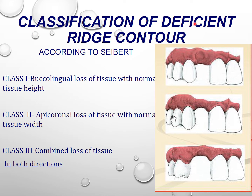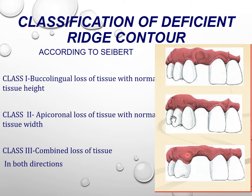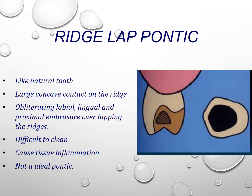Coming to the classification of deficient ridge contour — this is Siebert's classification. Class 1 is buccolingual loss of tissue with normal tissue height. Class 2 is apicocoronal loss of tissue with normal tissue width. Class 3 is combined loss of tissue in both directions — both apical and in tissue width. Coming to the different designs of pontic now.